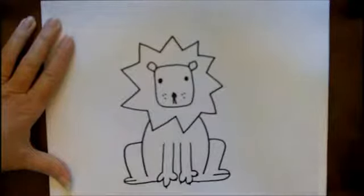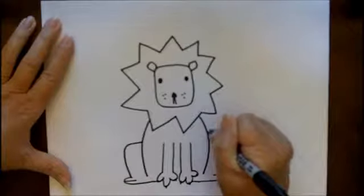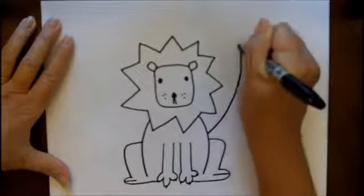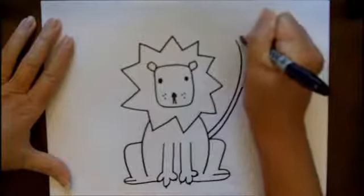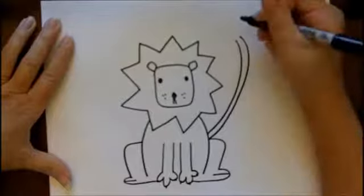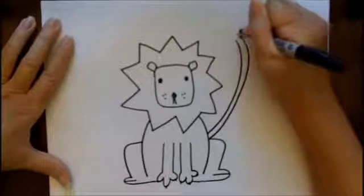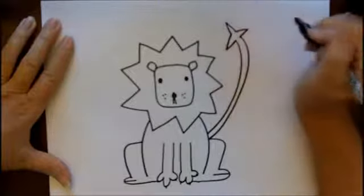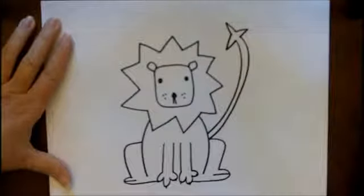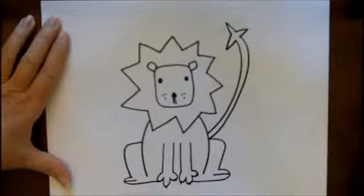The last thing that we'll want to do for our lion is we'll want to give him a tail. Let's find a good spot for it. Come out with a curved line and then another curved line right next to it and then we're going to put three V's at the top of those lines to close it up and that will be his tail.